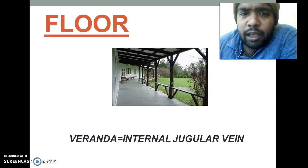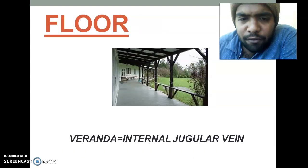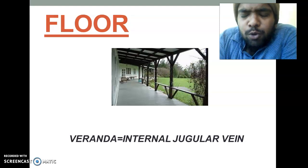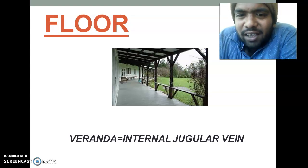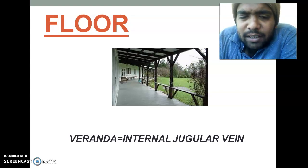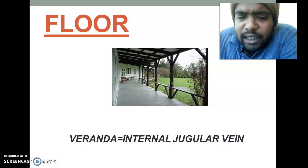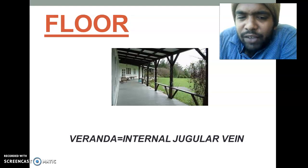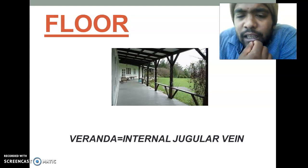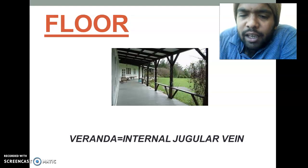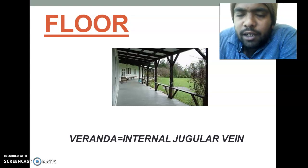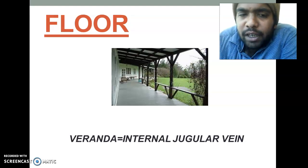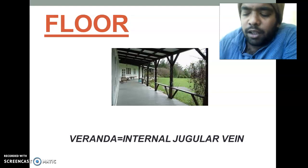About the floor — I have a photograph of the floor of the home. We use the term 'veranda' for the floor. From veranda, we take the letters V and E and silence the other letters. From VE, the V starts — so we can get Internal Jugular Vein. In the floor, the bulb of the Internal Jugular Vein is passing. So the floor of the middle ear relates to the Internal Jugular Vein.